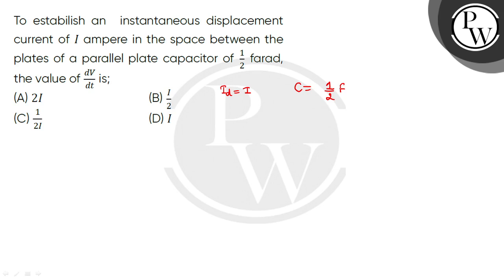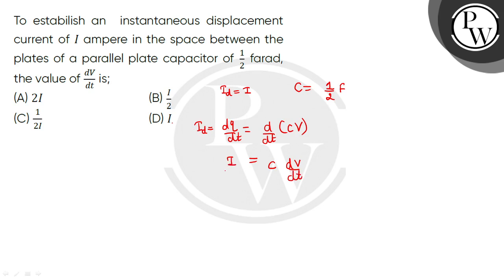What is the value of dv/dt? We can write the displacement current as dq/dt, and q we can write as C times v — the charge in the capacitor, that would be cv. Now C will be constant, so C is taken out with dv/dt. So the displacement current i equals C times dv/dt.